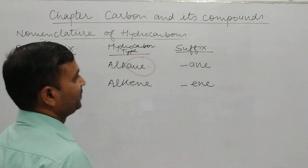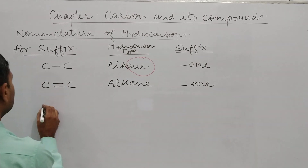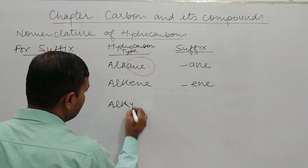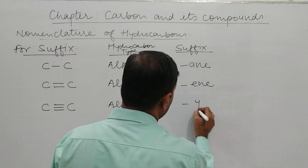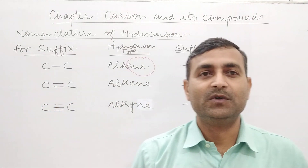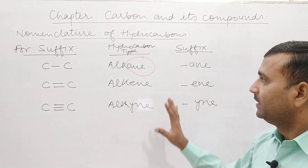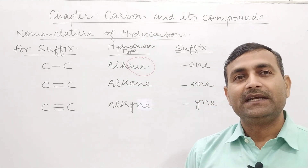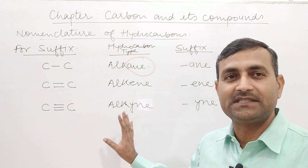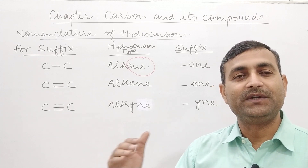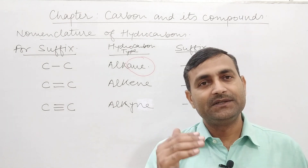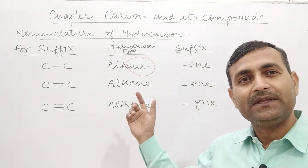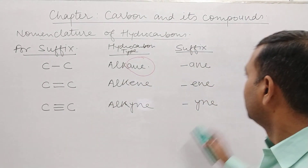तो अगर alkane है तो suffix 'ane' लग जाएगा, alkene है तो 'ene' लग जाएगा, और alkyne है तो 'yne' लग जाएगा। अब सवाल यह है कि क्या इतनी चीजों से हमारा IUPAC nomenclature complete हो जाएगा? Complete तो नहीं, लेकिन हम लोगों ने कुछ journey तय कर ली है towards the writing of IUPAC nomenclature of any hydrocarbon।